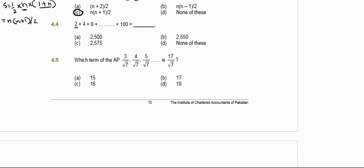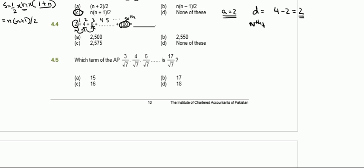Question 4.4: find the sum 2 plus 4 plus 6 plus ... plus 100. Our first term a equals 2, and the common difference is also 2, making this an arithmetic progression. Rather than counting all terms, we can find the number of terms using the nth term formula, since 100 is the last term.